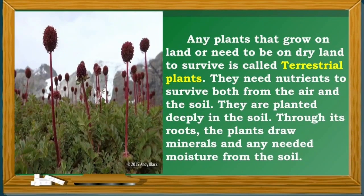Any plants that grow on land or need to be on dry land to survive are called terrestrial plants. They need nutrients to survive, both from the air and the soil. They are planted deeply in the soil. Through their roots, the plants draw minerals and any needed moisture from the soil.